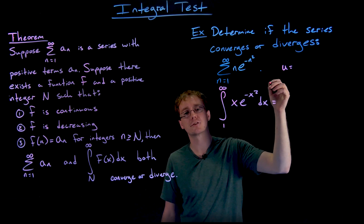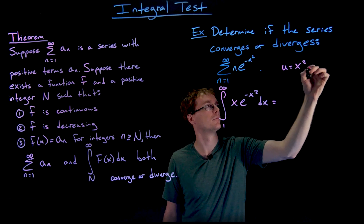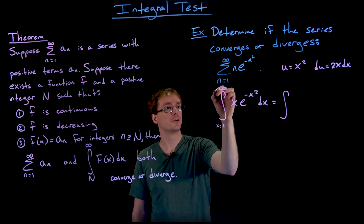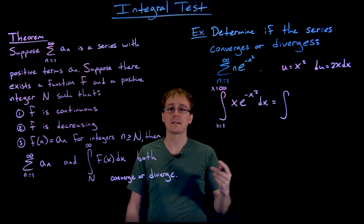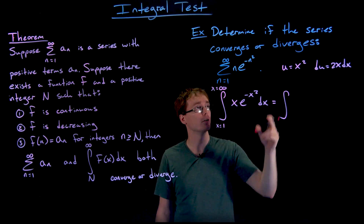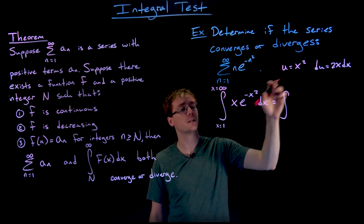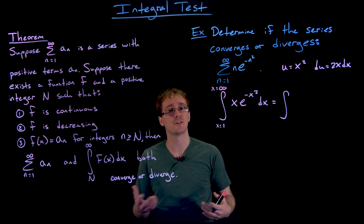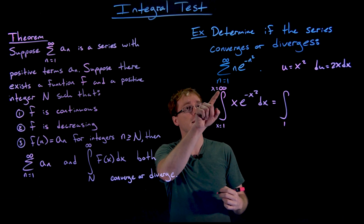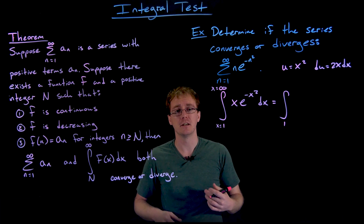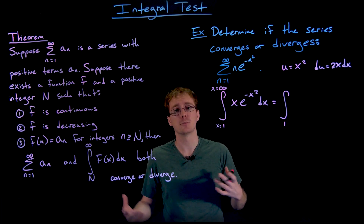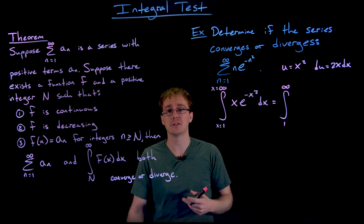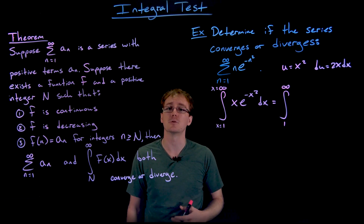We'll let u be equal to either x squared or negative x squared. These limits of integration are currently x values, like x is equal to 1 and x is approaching positive infinity. We have to convert those to u values for our new integral, and we do that just by plugging the corresponding x values into our substituting equation. In this case, nothing really changes because 1 squared is still going to be 1, and infinity squared is still going to be infinity, or a number that is increasing without bound when squared is still going to increase without bound. So we have technically changed our limits of integration, even though they've changed into the same values we started with.